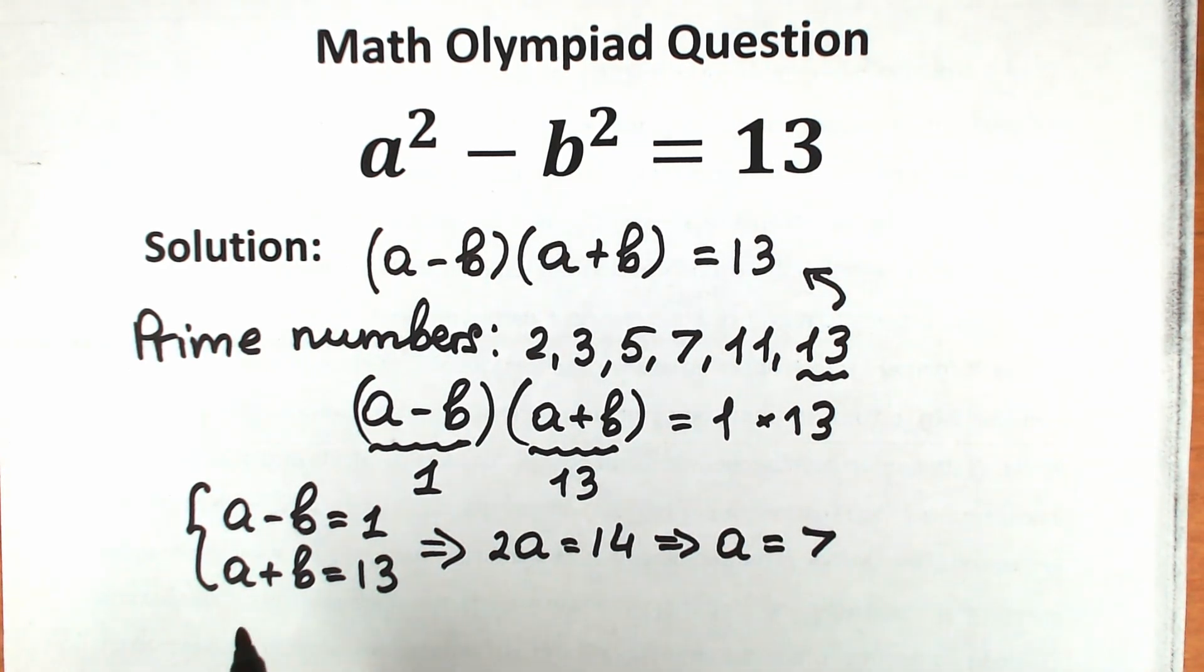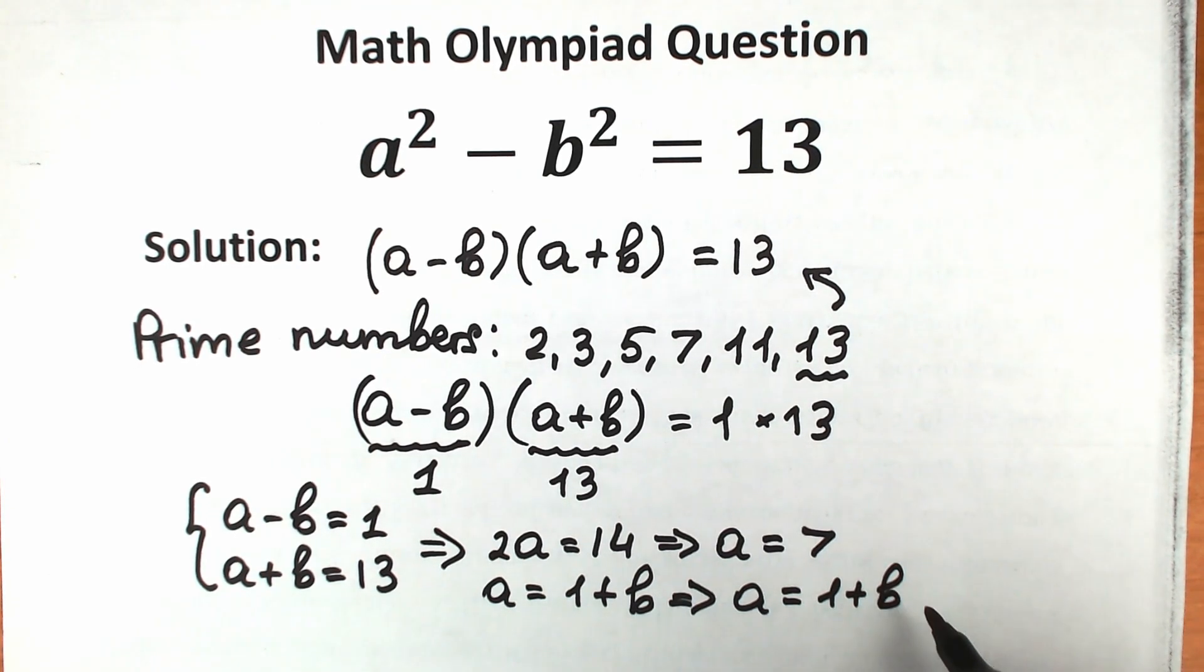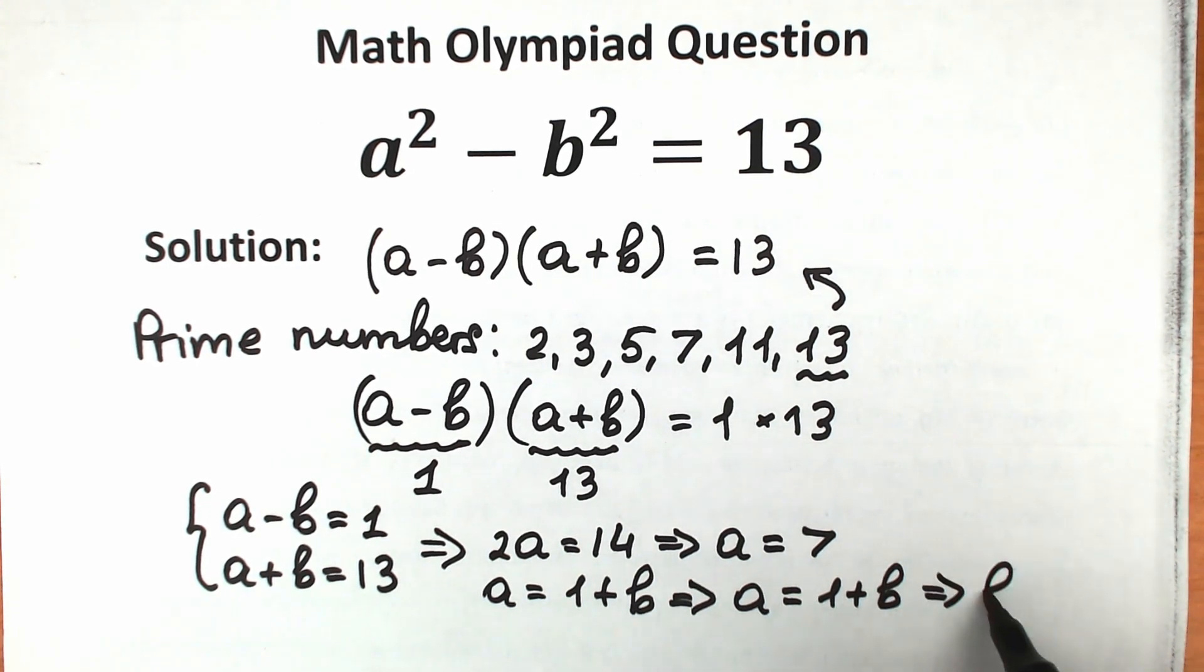And obviously, let's write a equals 1 plus b. From either of these equations, it doesn't matter. So we have a equals 1 plus b, and from here, since a is 7, we get 7 equals 1 plus b, so b equals 6. So a equals 7, b equals 6.